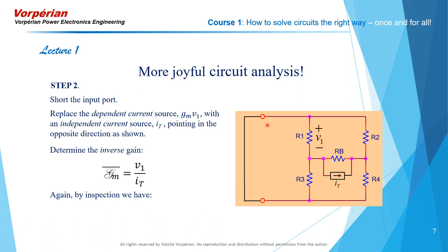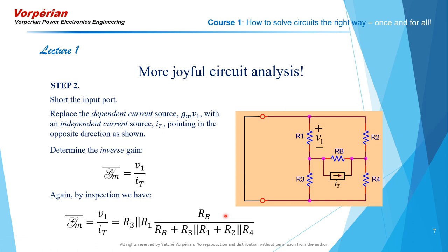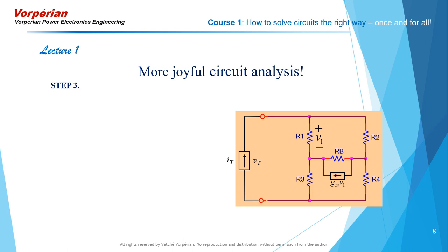Now this can be determined by inspection quite easily. The input port shorted places R1 in parallel with R3, and R2 in parallel with R4, and those two will be in series with each other. Therefore, you have a current division of IT between RB and the series combination of these parallel two resistors. That current which flows into R3 parallel R1, plus R2 parallel R4, generates a voltage across R3 parallel R1 by multiplying it with R3 parallel R1. And you're done with step two.